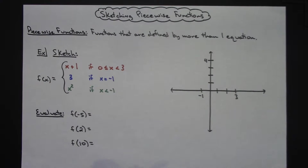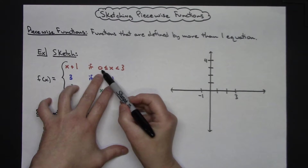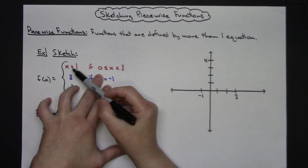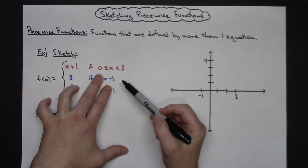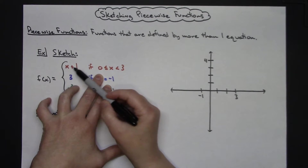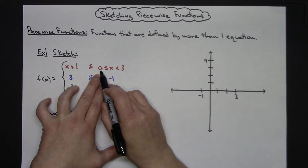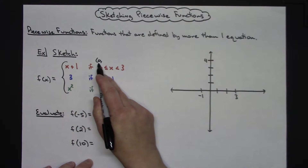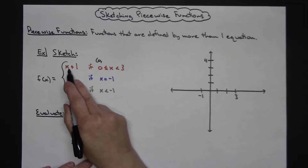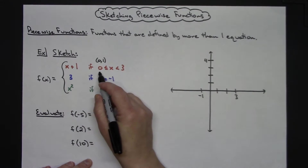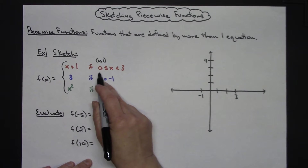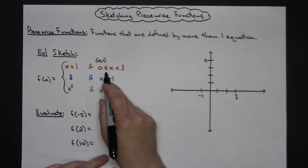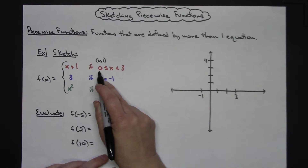An easy way to approach this is to identify a starting point and a stopping point for the line, since I know it's straight and I can connect those two points. When x is 0, plugging in: 0 plus 1 gives me 1, so I have the ordered pair (0, 1). Since the constraint is less than or equal to, this point is included, so I'll put a solid dot there.